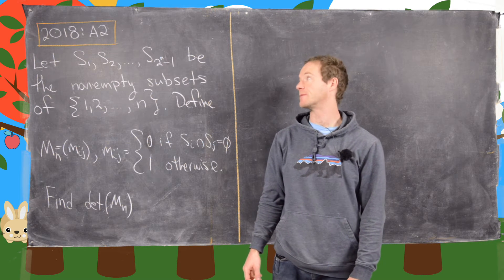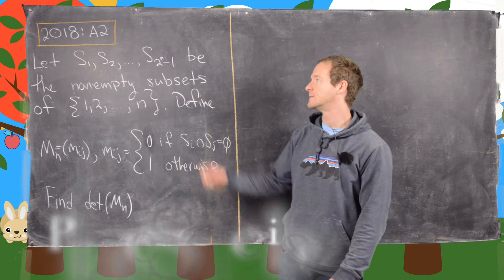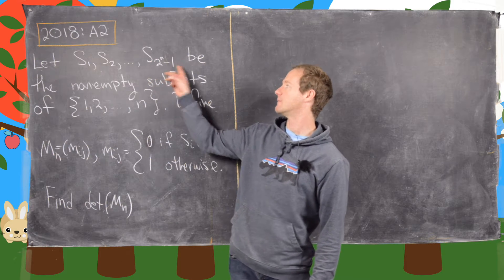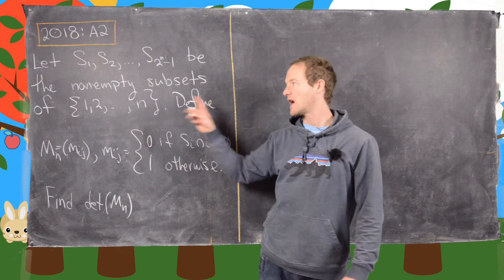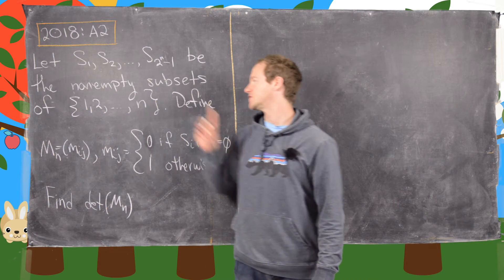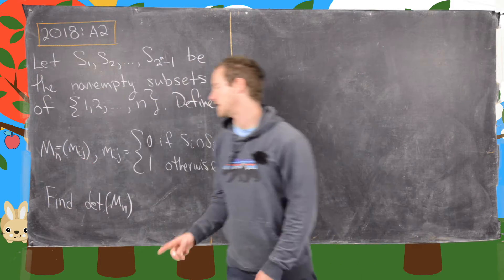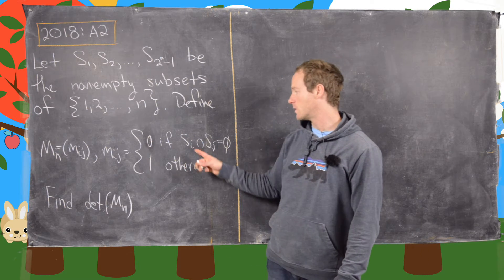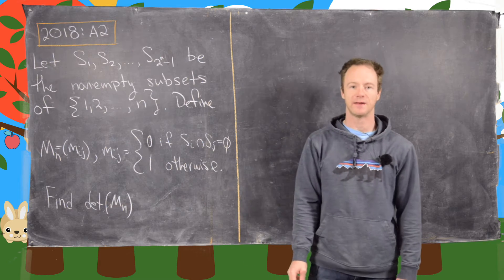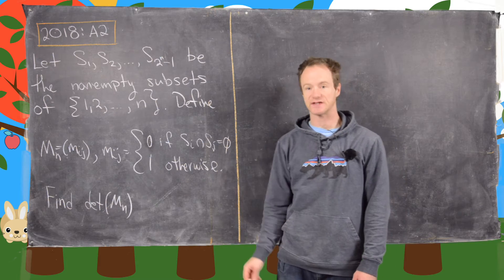In this video we're going to look at a solution to question A2 from the 2018 Putnam exam. We want to let S1, S2, all the way up to S_{2^N - 1} be the non-empty subsets of the set {1, 2, ..., N}. We define a matrix MN whose entries are 0 if S_i intersect S_j is empty, and 1 if it's non-empty. Our goal is to find the determinant of this matrix MN.